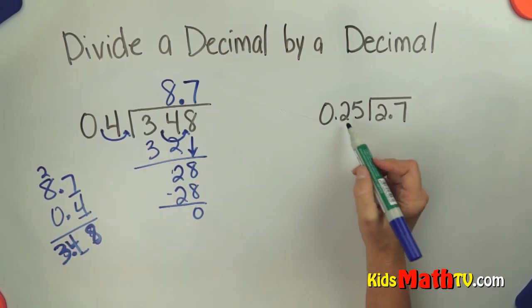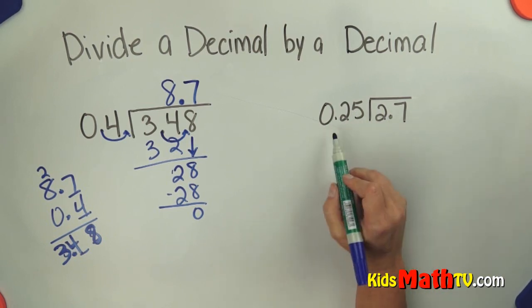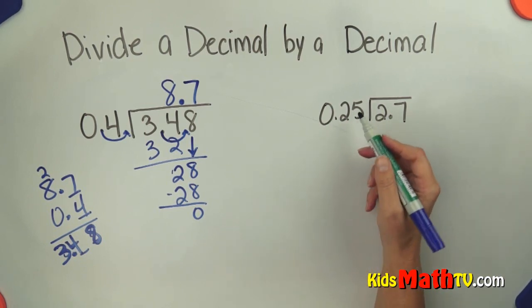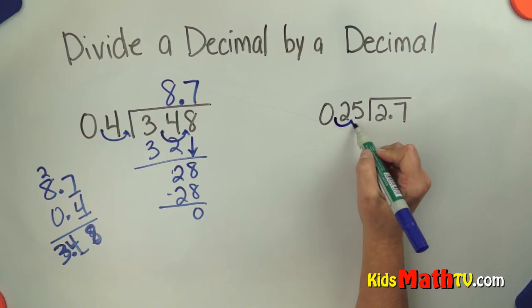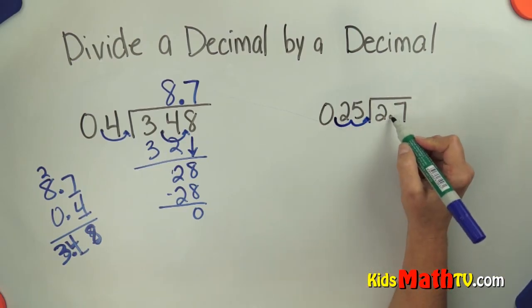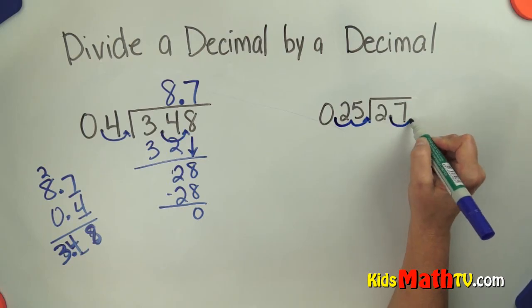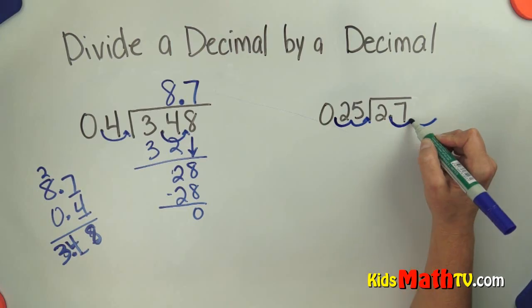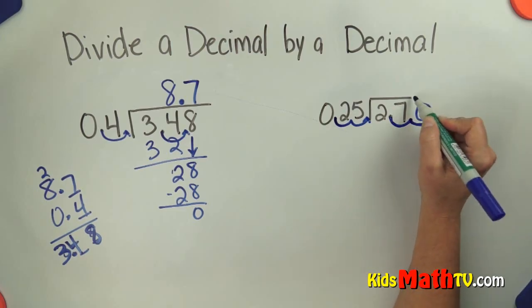Let's try this one. In this one I see 2 decimal places in my divisor so I need to move it over 2 places to the right, as far as I can go. Which means I have to move this one over 2 places as well. Well, there's only one number there but right here is a placeholder 0.